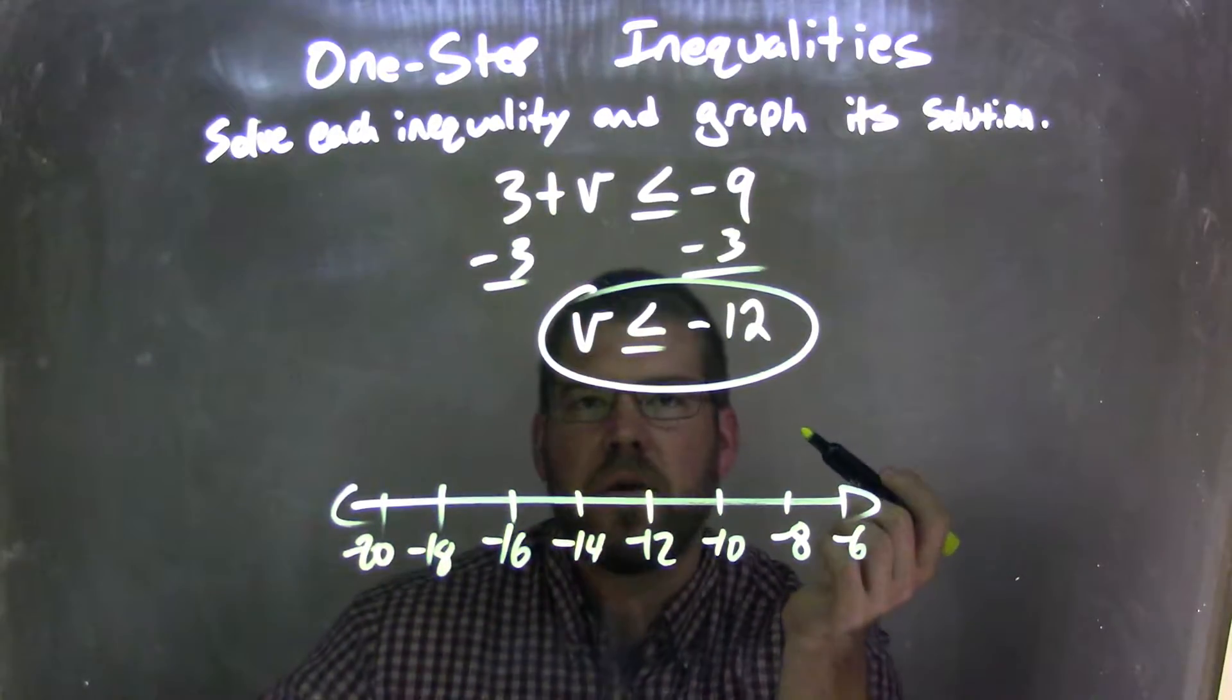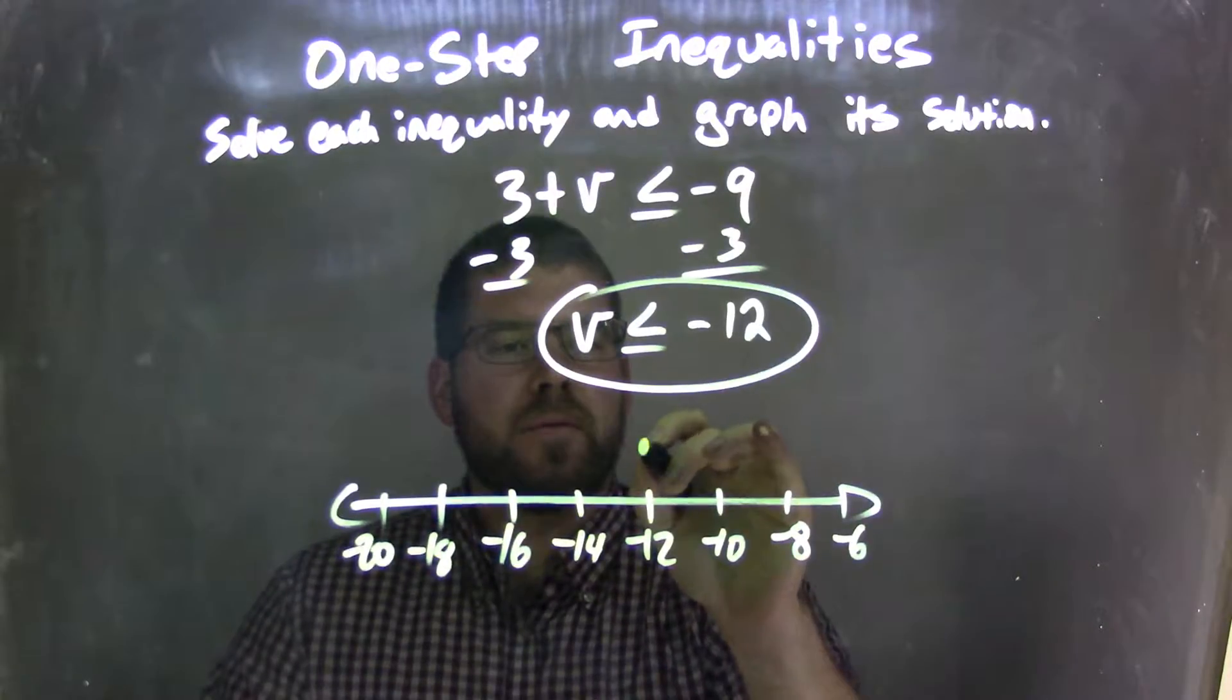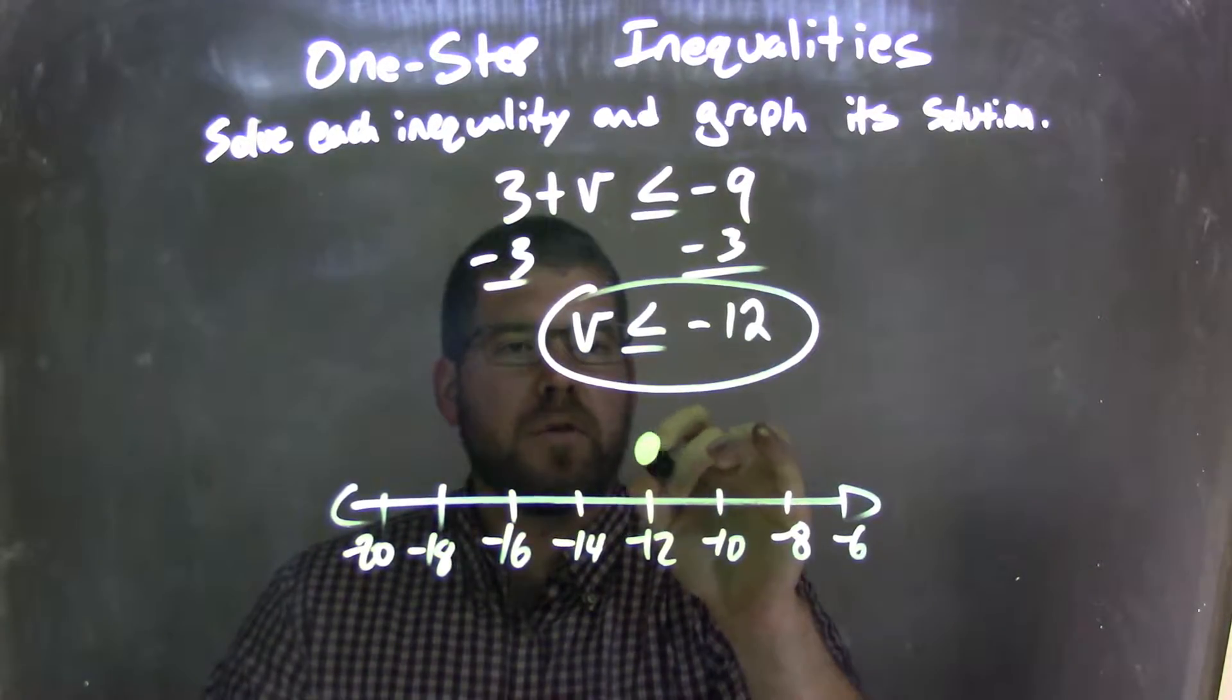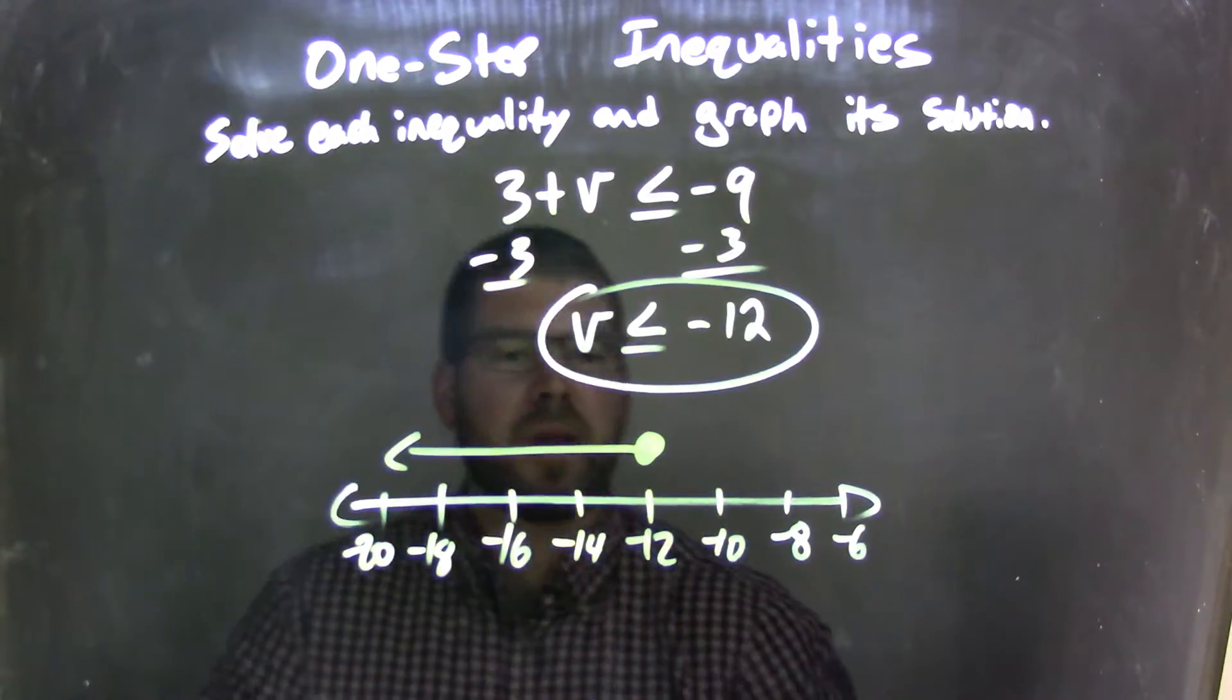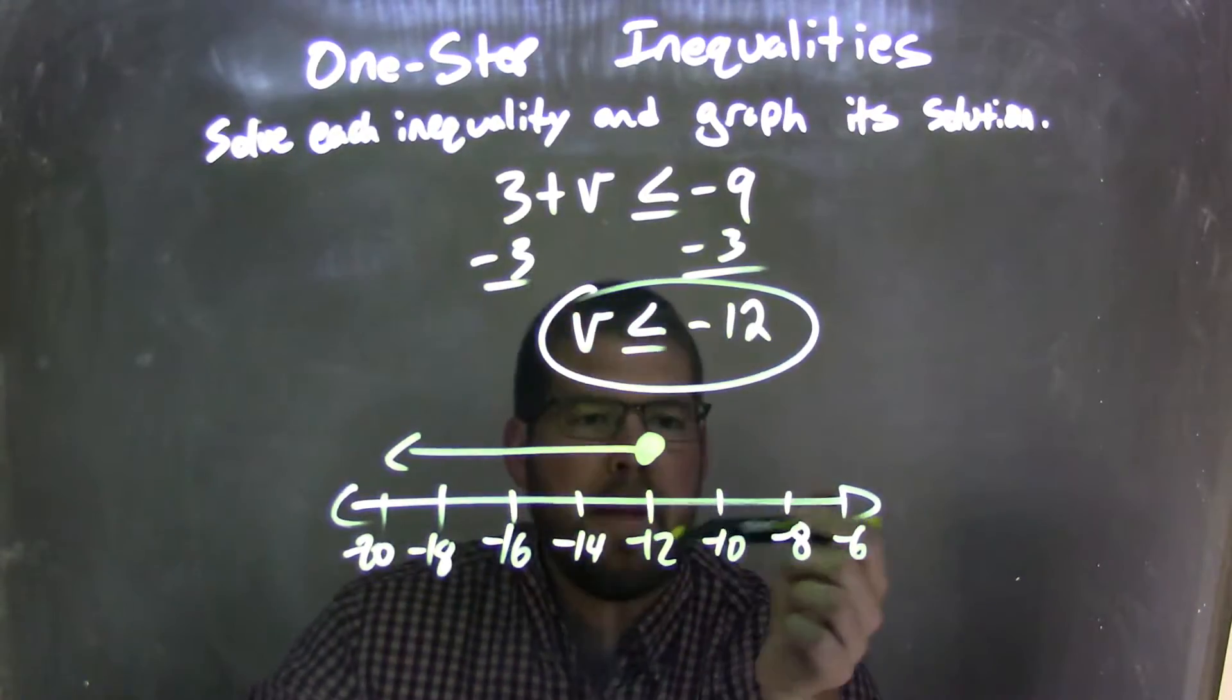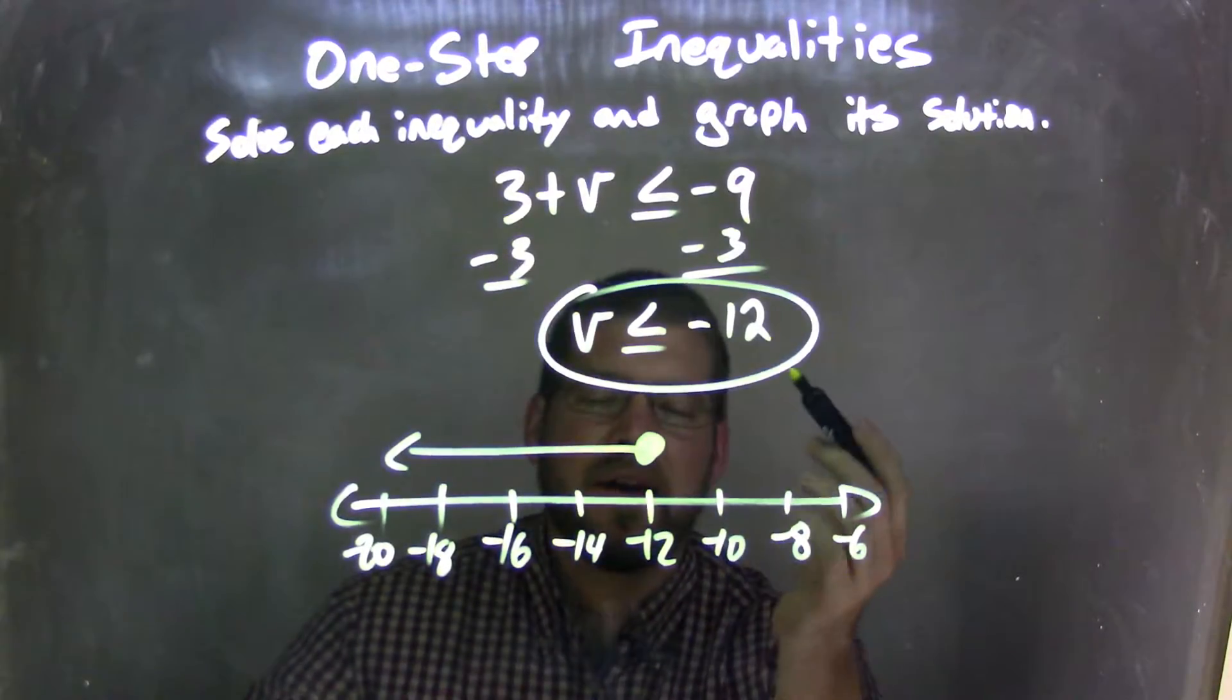So v is less than or equal to negative 12. The equal to sign gives me a closed circle, closed circle right there. And the less than sign puts the arrow to the left. And there we have it. We have a graph here that matches our inequality of v is less than or equal to negative 12.